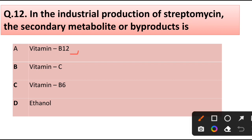Question number 12. In the industrial production of streptomycin, the secondary metabolite or byproduct is: vitamin B12, vitamin C, vitamin B6, or ethanol. Correct answer is option A, vitamin B12.